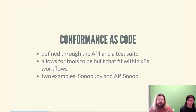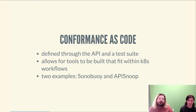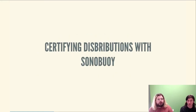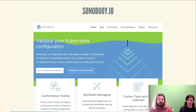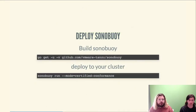This process is enabled because in Kubernetes, conformance is defined through the API and a test suite that allows tools to be built that fit within existing Kubernetes workflows. Two great examples are Sonobuoy and API Snoop. To certify your distribution, you use Sonobuoy — a command line utility that interfaces with your cluster and deploys conformance suites to generate data for your PR.